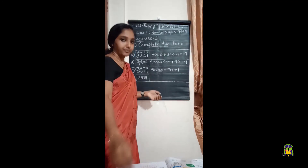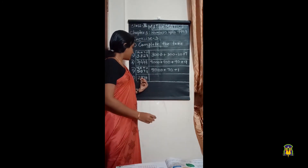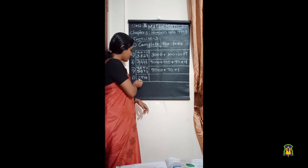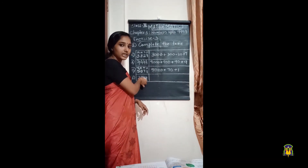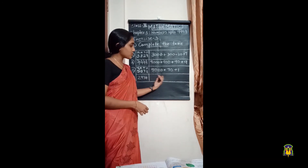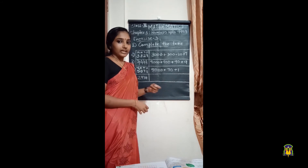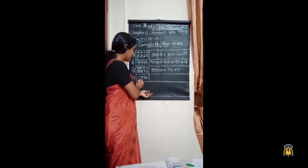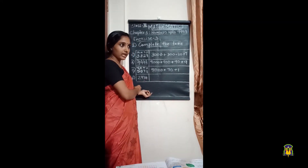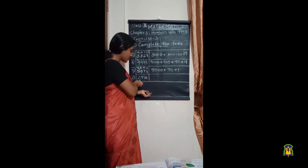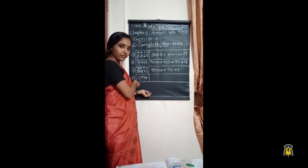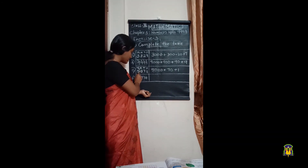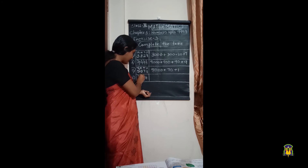In the fifth question, the short form of the number is given: two thousand nine hundred and thirty-four. We have to write the expanded form. Two thousand nine hundred and thirty-four — two is in the thousands place, nine is in the hundreds place, three is in the tens place, and four is in the ones place.